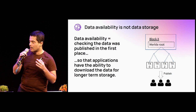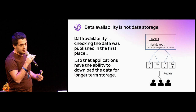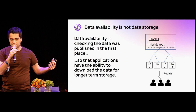So a better name for it might actually be 'data publication.' For example, in Ethereum EIP-4844, data is only guaranteed to be stored by nodes for 30 days and then deleted, because it's only about making sure it's published so that people can generate fraud proofs or users can download the data to know their balances. It's not about long-term storage.